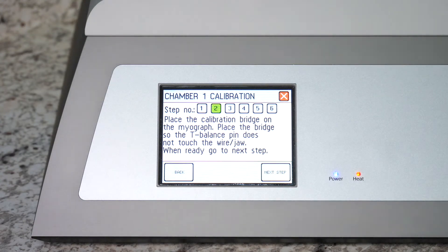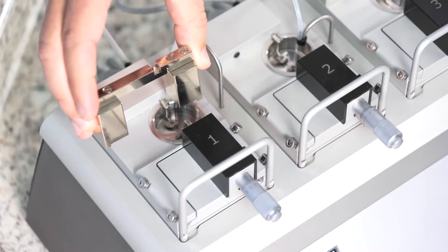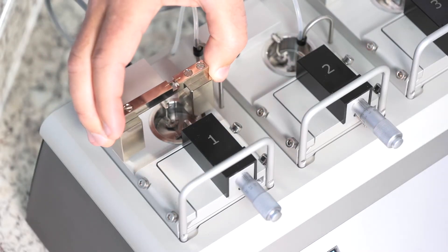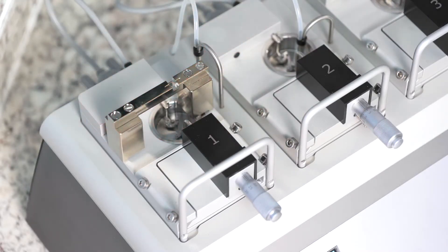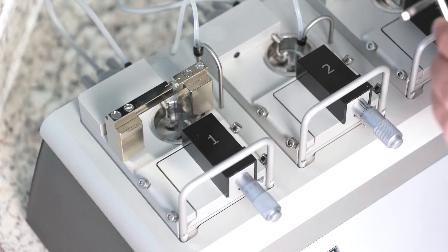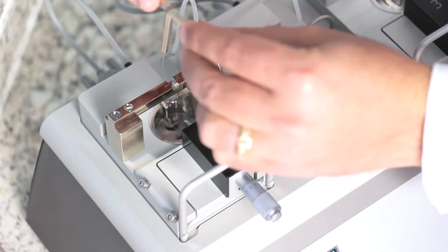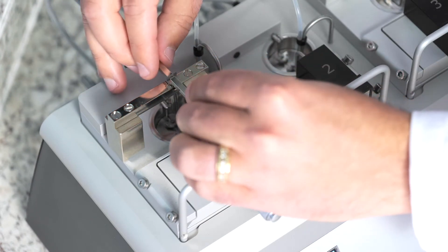Step two tells you to place the calibration bridge and T-balance on the chamber. So we will place the calibration bridge over the chamber and then we will take the T-balance and drop it into the chamber in the grooves of the calibration bridge.